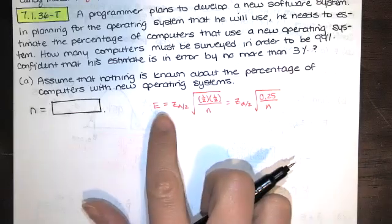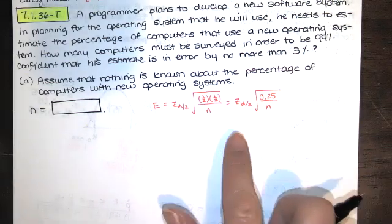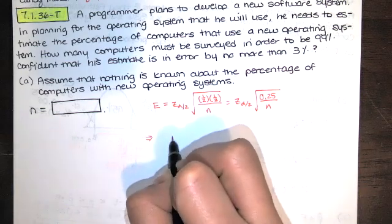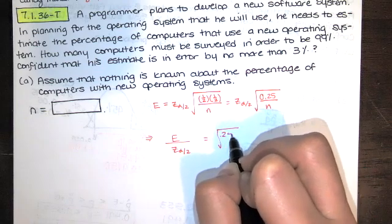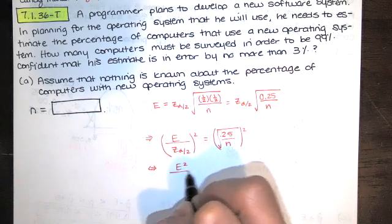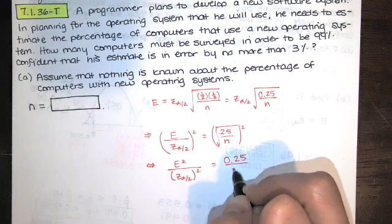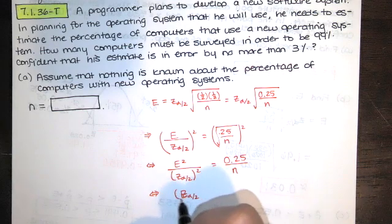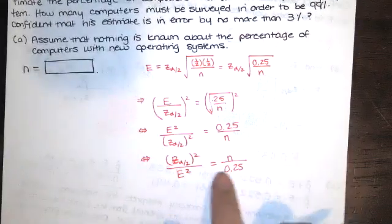If I take this and I'm solving for n because I know what the e is, I know what the corresponding z sub alpha over 2 should be if I'm looking for a 99% confidence interval. The way I would get n by itself is I would divide both sides by that z score, it's a critical value, and we'll square both sides to get rid of the square root. And then we'll have the error squared over that z score squared. And now I want to get n in the numerator, so we'll flip these. So I'll have z sub alpha over 2 squared in the numerator over e squared equals n over 0.25. And then to get the n by itself, we multiply by 0.25.